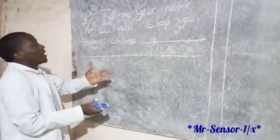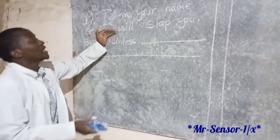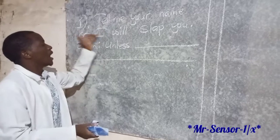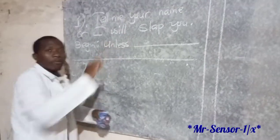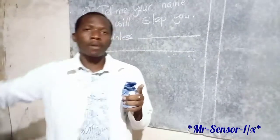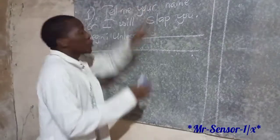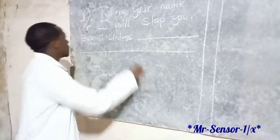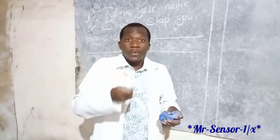The outcome, if the person doesn't tell the other person their name, is that they will be slapped. 'Tell me your name, or I will slap you.' When we talk about 'unless,' we will firstly talk about what should be done to avoid a consequence. What should be done is that a name should be told, or else the person will be slapped. So we consider starting with 'unless.'